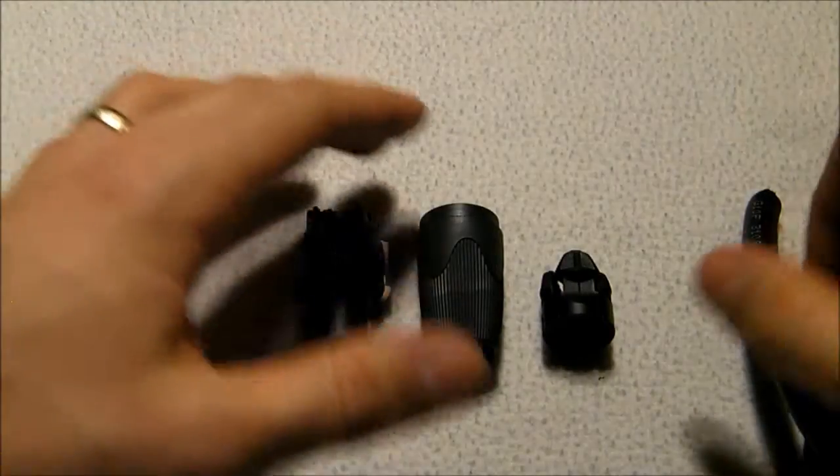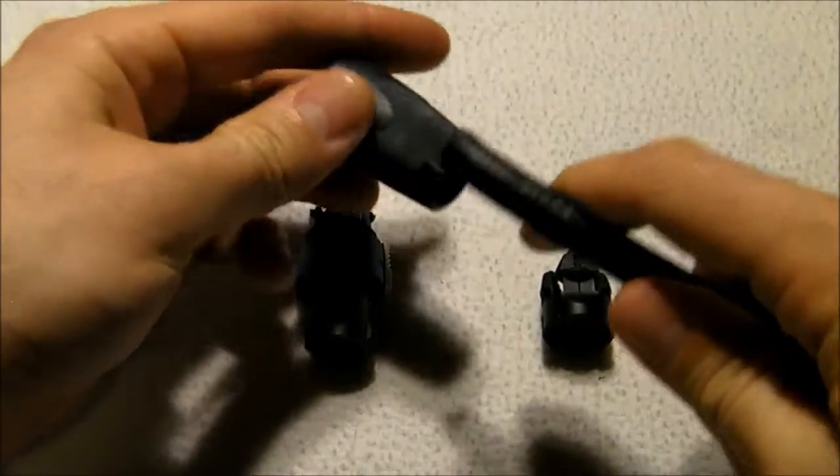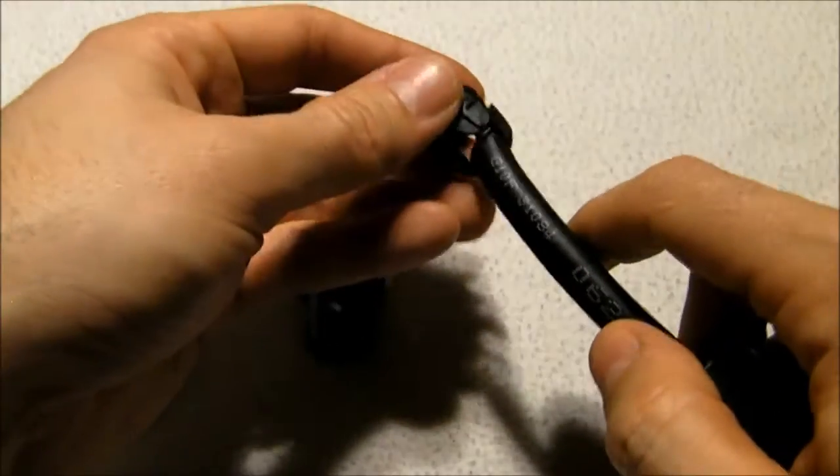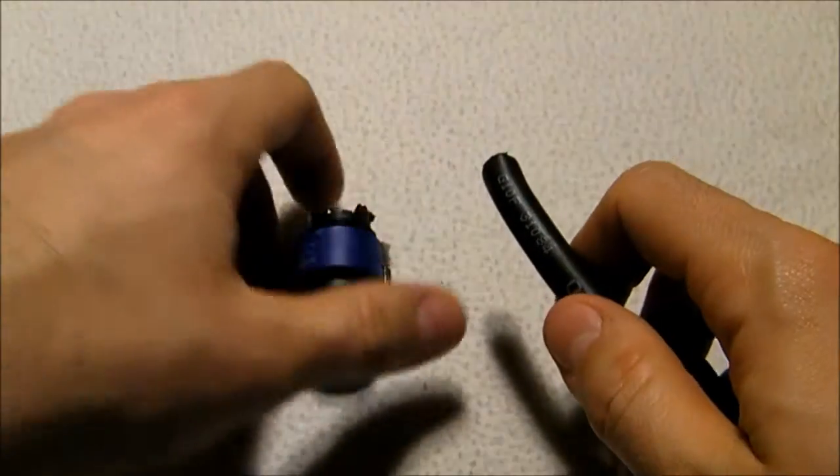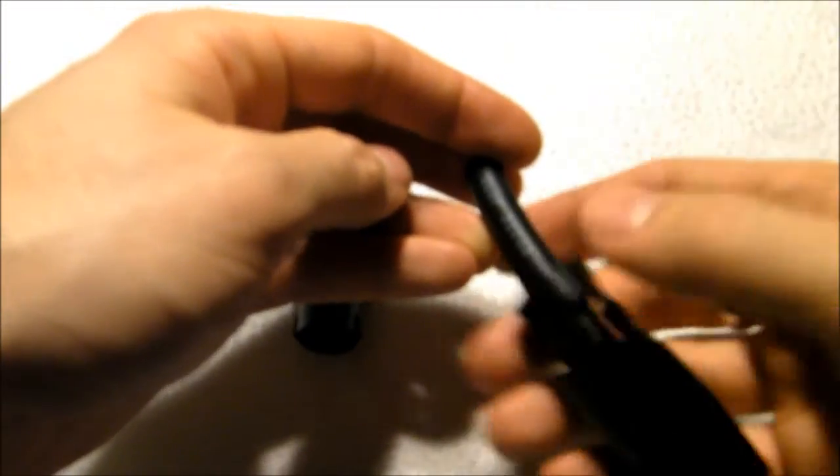Now, the first thing we want to do when assembling this or any cable really is to make sure that we put these cover pieces onto the cable first. There's nothing worse than getting your connection perfect and then realizing that you forgot to put these on, so make sure you put them on first.